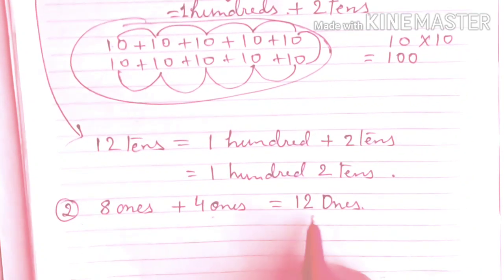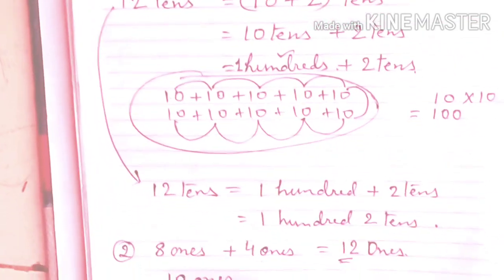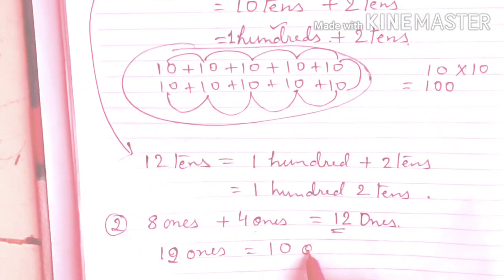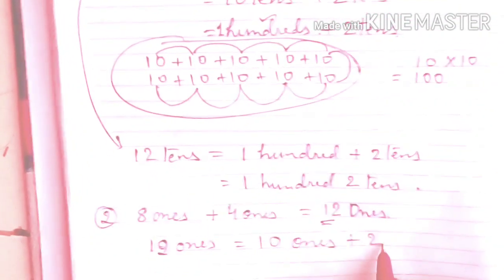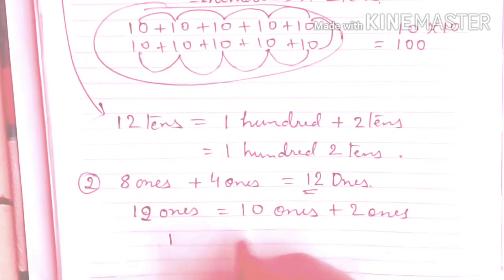12 ones, same we have to regroup this. 12 ones is equals to 10 ones plus 2 ones. 10 ones, we have 1. How many 1s do we have? 10.